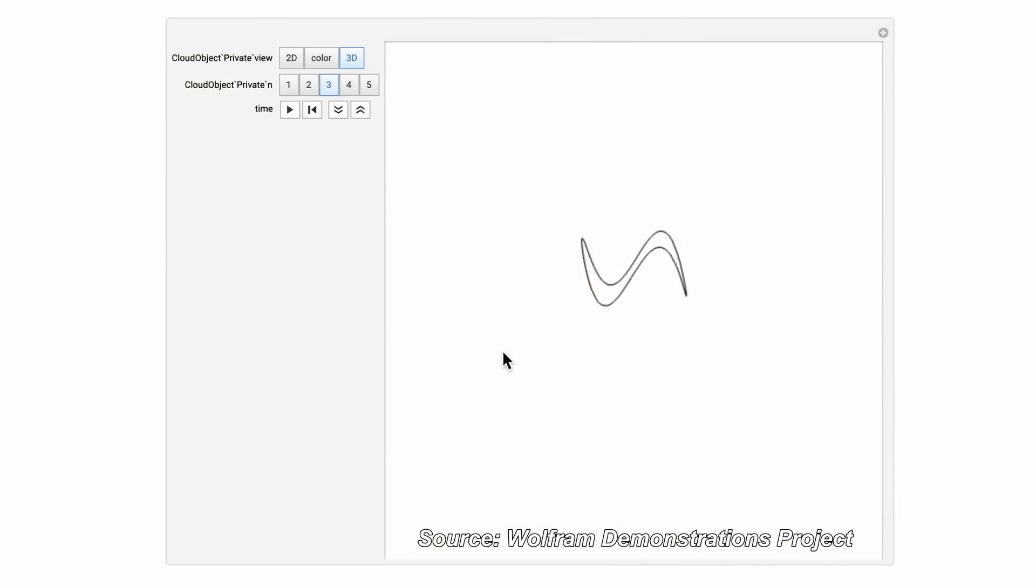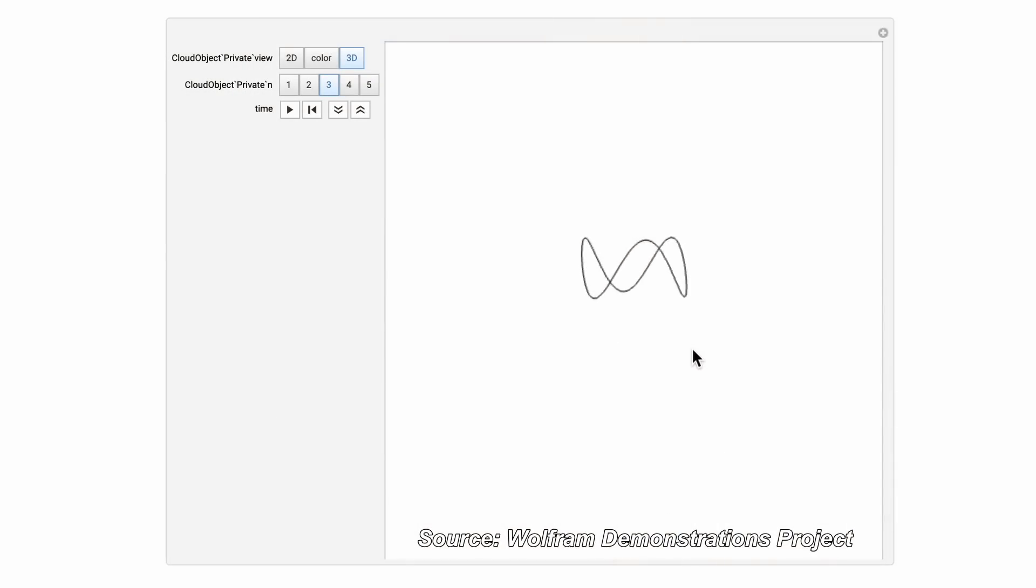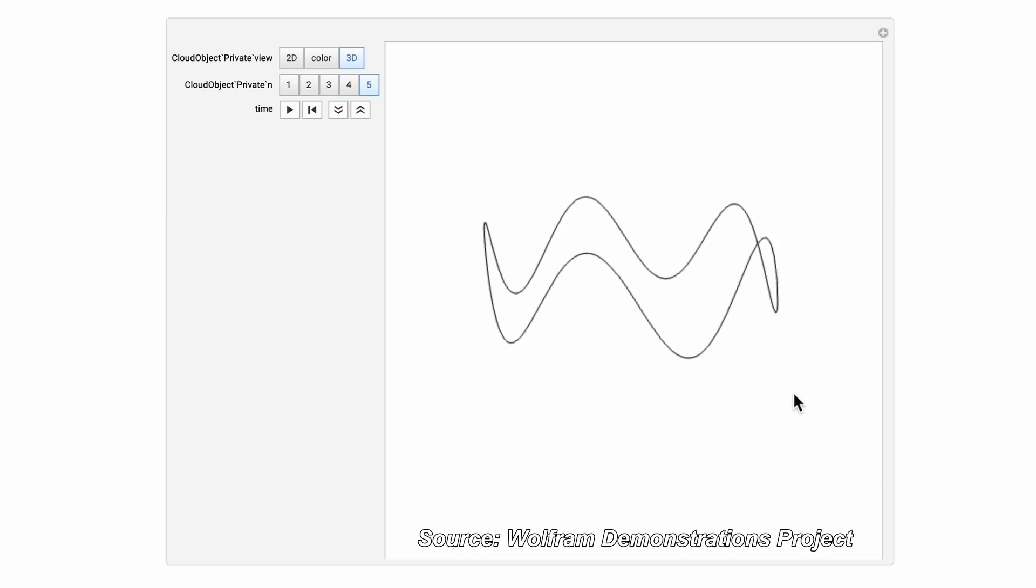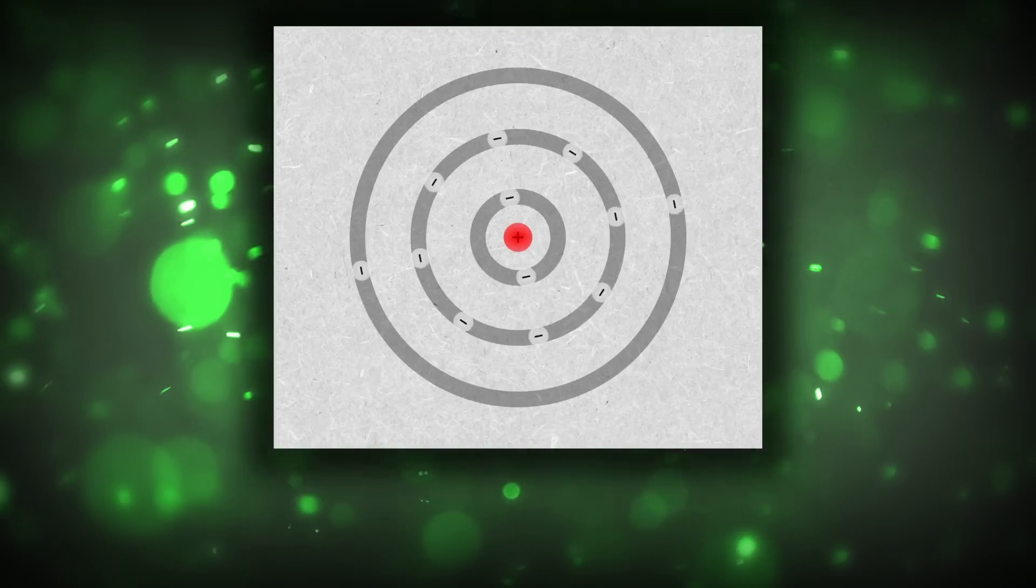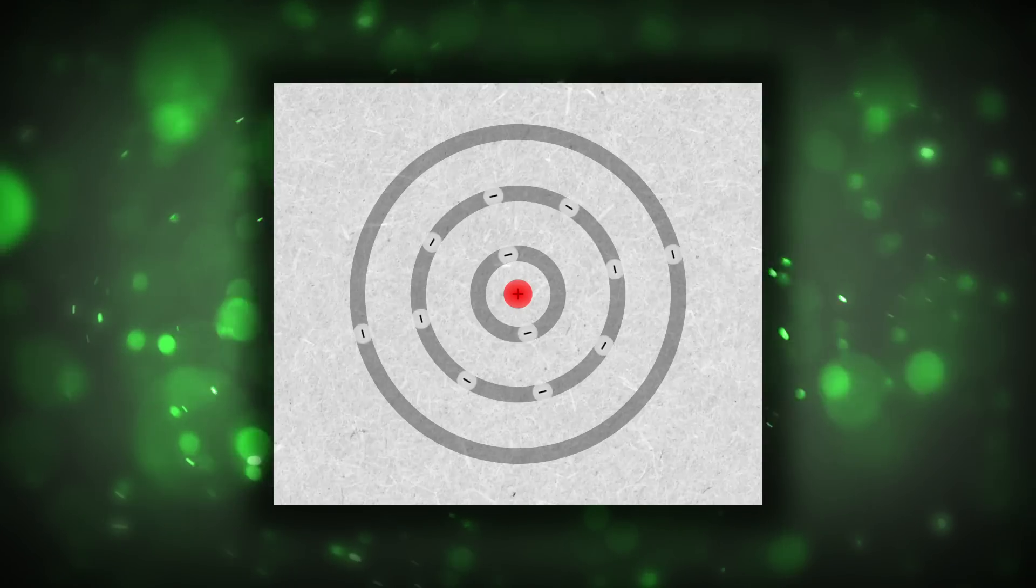Schrödinger said that electrons orbit the atom as circular standing waves. This means that we can only get an integer number of wavelengths that can exist around that circle. Since a wave's energy is related to its wavelength, this explains why only specific energy levels are allowed according to Bohr's model.